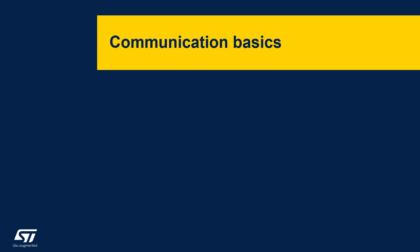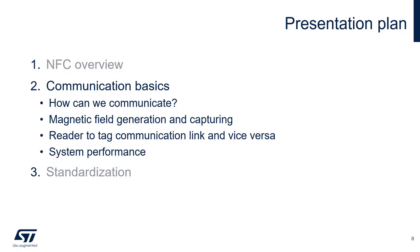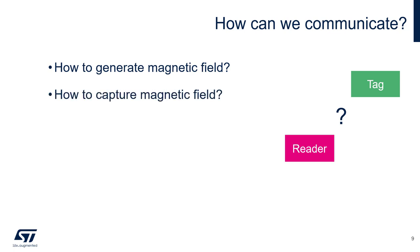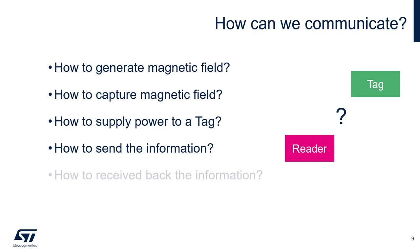Now let's look at the communication basics of an NFC system. First, we'll look at how the reader and the tag communicate, how the magnetic field is generated and captured, and then the reader-to-tag communication link and vice versa, and finally system performance. So the first question is, how can we communicate? Before we can answer this question, we have to ask several others: how do we generate a magnetic field, how to capture it, how to supply power to a passive tag, how do we send information to the tag, and how to receive back the information the tag is sending us?